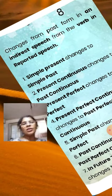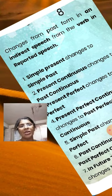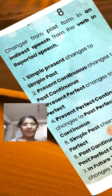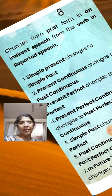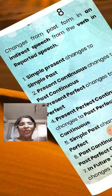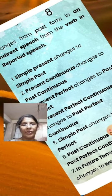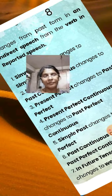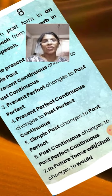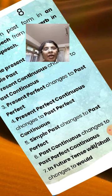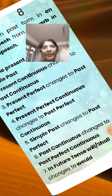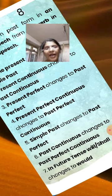Changes from past form in an indirect speech from the verb in reported speech: Simple present changes to simple past. Present continuous changes to past continuous. Present perfect changes to past perfect. Present perfect continuous changes to past perfect continuous. Simple past changes to past perfect. Past continuous changes to past perfect continuous.